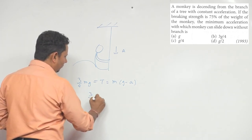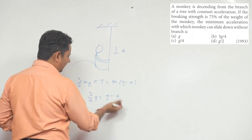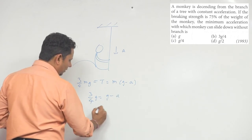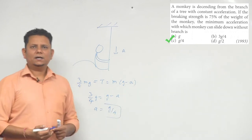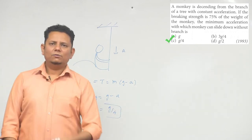So it will be 3 by 4 G equals G minus A. Then acceleration will be G by 4. So we can say that option number C would be the right choice.